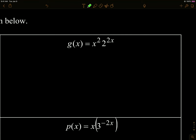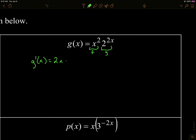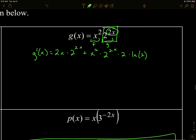Let's try a product rule one. Here's my f and here's my g. The first one uses power rule because x is in the base; the second uses the exponential rule because x is in the exponent — it's not power rule. So the derivative of the first is 2x times the second, 2 to the 2x, plus the first times the derivative of the second. The derivative of that exponential is itself, then times the chain rule: derivative of the inside 2x is 2, times the natural log of the base.